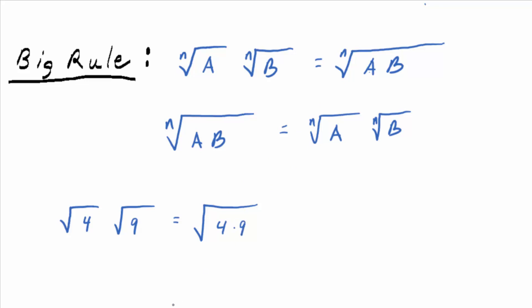Is it true? Well, that four times nine is 36, so the square root of 36 is what? Six, but then individually, what's the square root of four? Two. Square root of nine? Three. Two times three is six last time I checked.